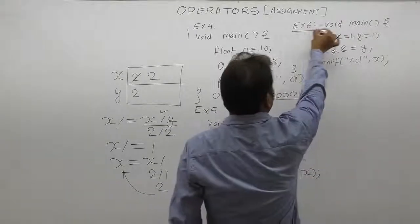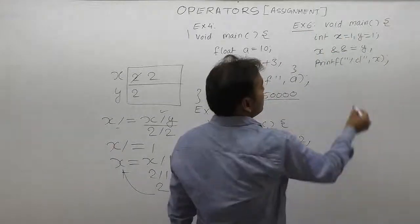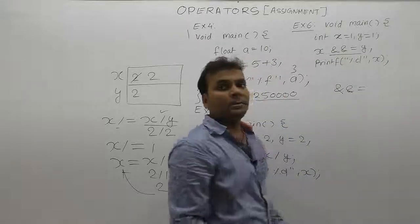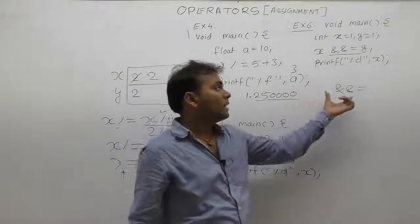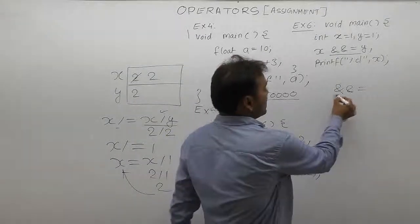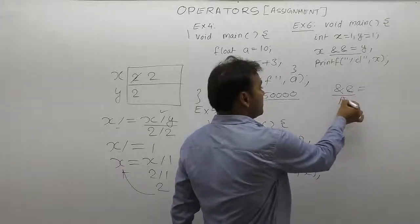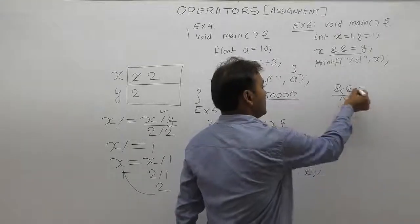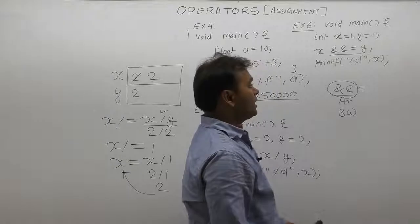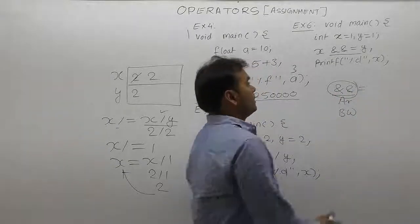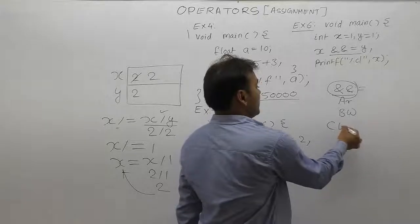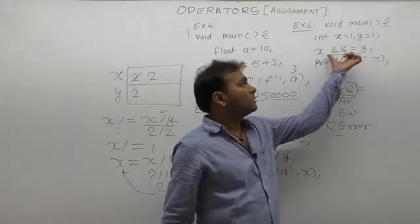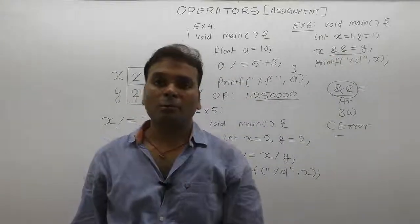In example 6, we are using the compound assignment operator with logical AND (&&=). As discussed in the basics of assignment operators, compound operators can use arithmetic or bitwise operators, but logical AND is not valid as a compound assignment operator. Therefore, this raises a compile-time error. Logical operators cannot be used in compound assignments.